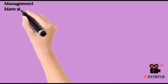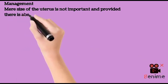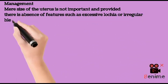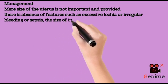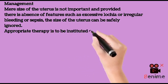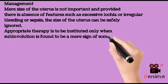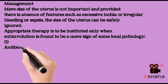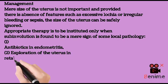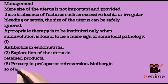Management. The mere size of the uterus is not important, and provided there is absence of features such as excessive lochia, irregular bleeding, or sepsis, the size of the uterus can be safely ignored. Appropriate therapy is to be instituted only when subinvolution is found to be a sign of some local pathology: 1. Antibiotics in endometritis, 2. Exploration of the uterus in retained products, 3. Pessary in prolapse or retroversion. Methergine, so often prescribed to enhance the involution process, is of little value in prophylaxis.